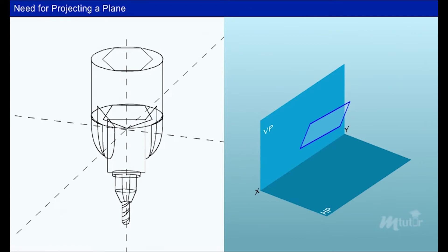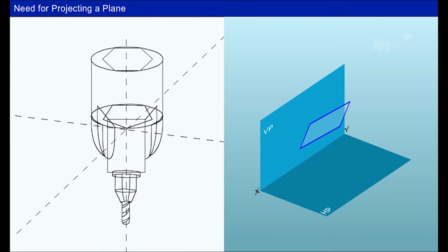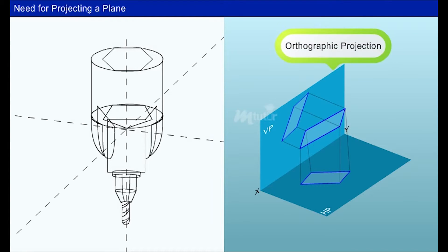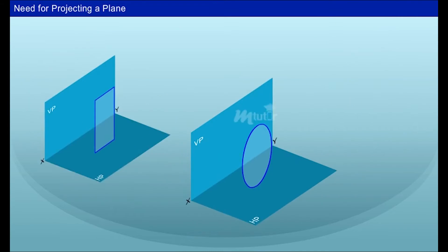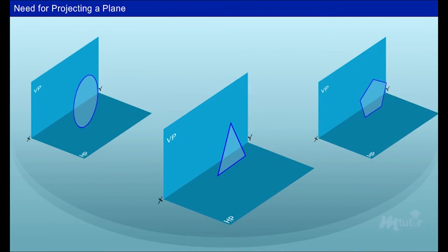These planes joining two surfaces may be of hexagon, pentagon, square, rhombus, rectangle, triangle, circle, etc. These adjoining surfaces are planes. To project these planes in an effective manner, the designer uses a method called orthographic projection of planes. In this lesson, we will see the orthographic projection of a plane and the positioning of various planes in detail.